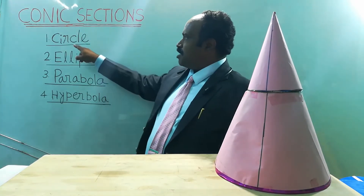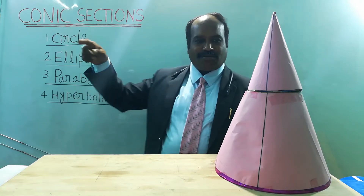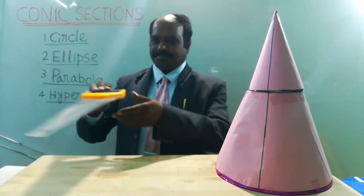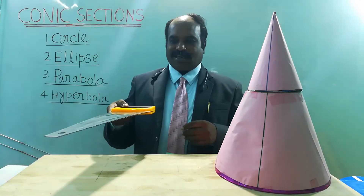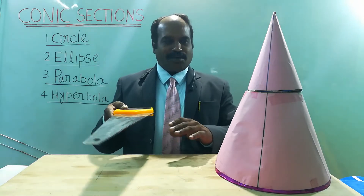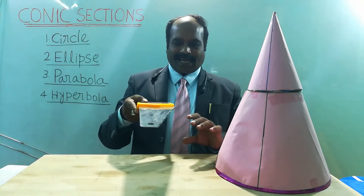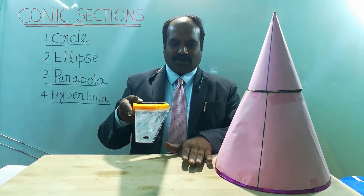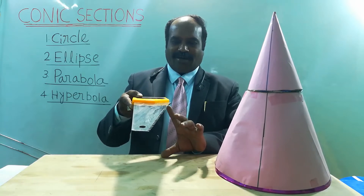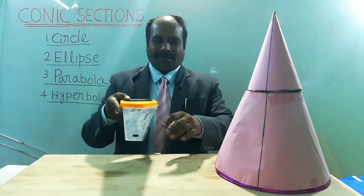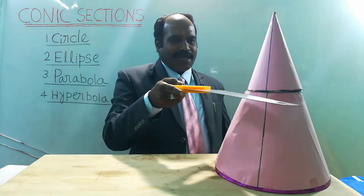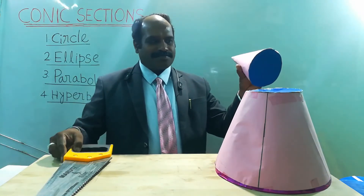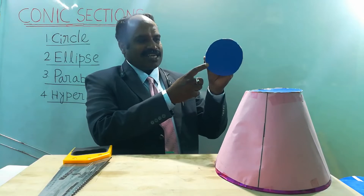To obtain the first conic section called the circle, I am going to cut the cone parallel to the base. A saw or knife is taken and the cone is cut parallel to the base — meaning the height from the base must be uniform, so that the knife is parallel to the base. When the cone is cut parallel to the base, the section obtained is called a circle. This is the first conic section.